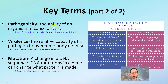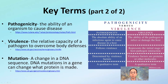In addition, we have pathogenicity, virulence, and mutation. Pathogenicity and virulence are compared here, looking at the ability of an organism to cause disease. Virulence is the relative capacity of a pathogen to overcome body defenses — essentially how likely it is to infect you and cause a problem. Mutation is simply a change in DNA sequence which leads to a change in proteins.